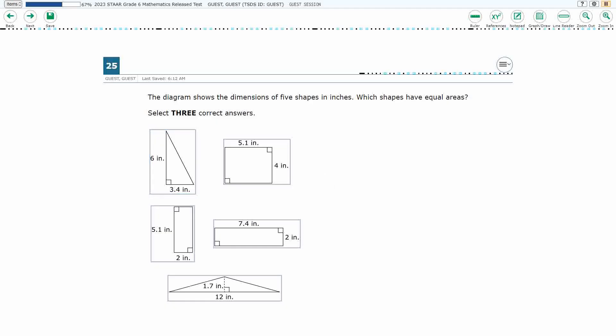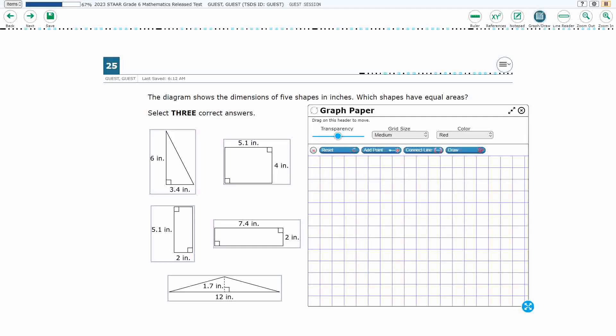We have, looks like we've got two triangles, but they're completely different, and looks like we've got three rectangles. We need to find shapes that have equal areas.